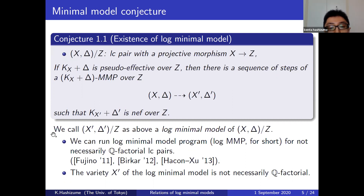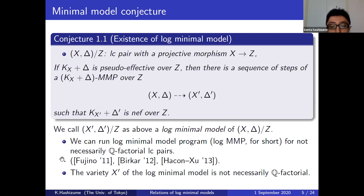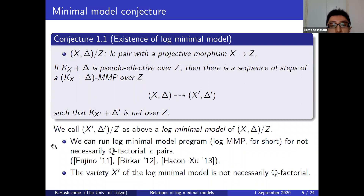There is another important conjecture called the abundance conjecture, which states that all log-minimal models have a nice fibration. In this talk, I will focus on the minimal model conjecture. Currently, we can run the log-minimal model program for all — not necessarily Q-factorial — log-canonical pairs. The cone and contraction theorem is proved by Fujino, and the existence of flips was proved by Birkar and Hacon-Xu.